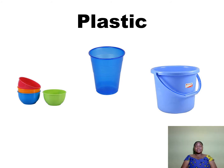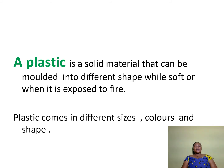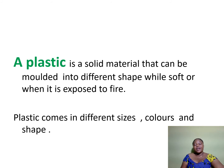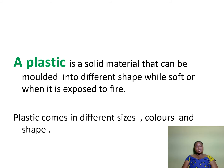Can you mention more examples of plastics? So what is a plastic? A plastic is a solid material that can be molded into different shapes while soft or when it is exposed to fire. Plastic comes in different sizes, colors and shapes.